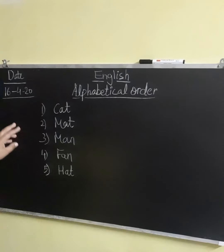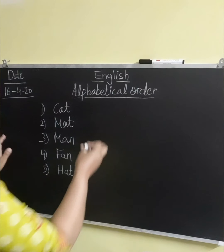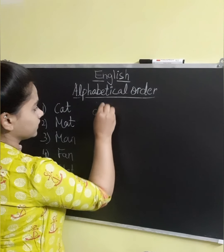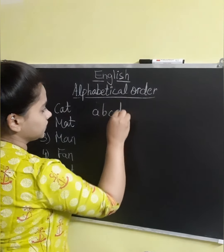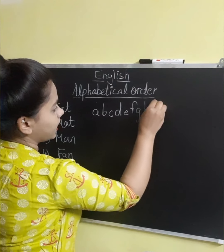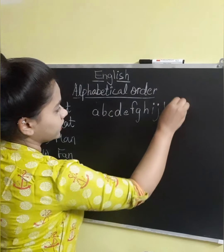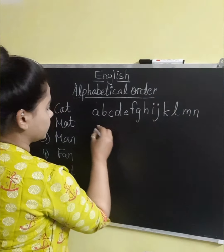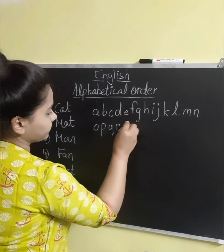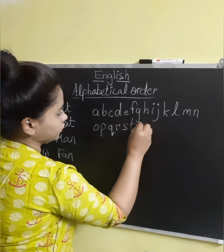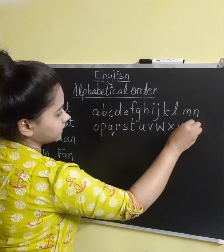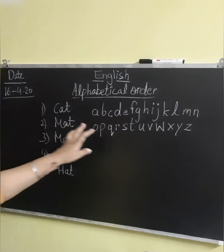So now in the alphabetical order, just write down the alphabet. Simply we will write here: A, B, C, D, E, F, G, H, I, J, K, L, M, N, O, P, Q, R, S, T, U, V, W, X, Y, and Z. So these are the alphabets here.